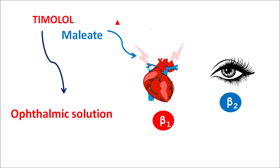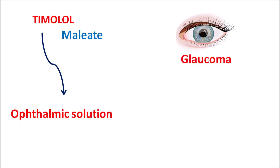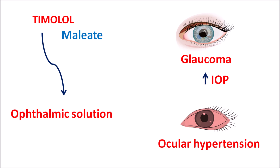Timolol can also block beta-2 receptors located on the eye, which reduces intraocular pressure. Therefore, timolol maleate is indicated for the management of glaucoma, which is associated with increased intraocular pressure. Timolol reduces intraocular pressure by reducing the formation of aqueous humor, and it can also reduce blood pressure, making it useful in the treatment of ocular hypertension to prevent vision loss.